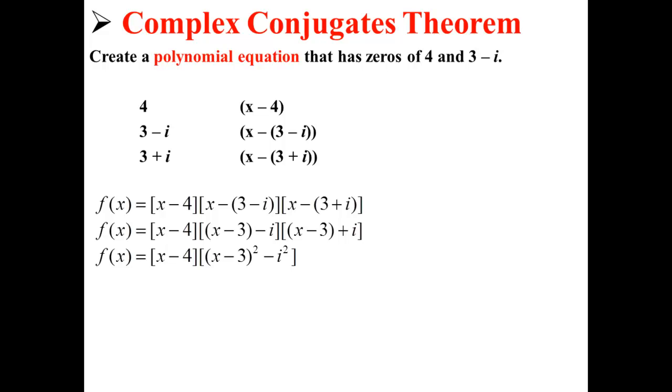Here we simplify to x minus 4 times x minus 3 squared minus i squared, allowing us to collapse the last two terms.